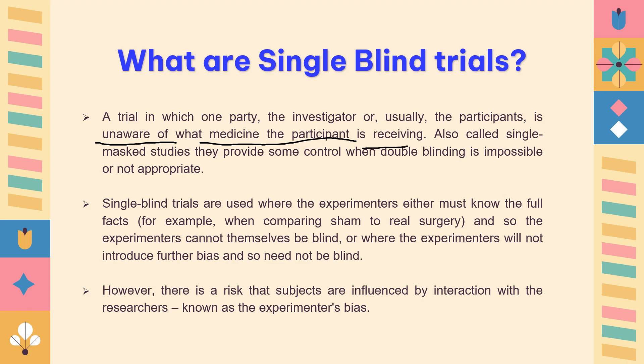Blinding always carries a risk of the subject being influenced, so researchers are kept blinded to the study treatment to eliminate that risk. This is called experimenter bias, where the researcher is aware of the study treatment and can introduce bias. Single blinded studies are very effective at avoiding experimenter bias, and that is their main purpose.